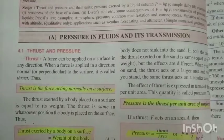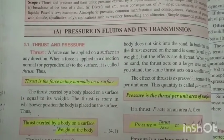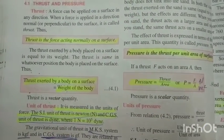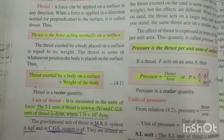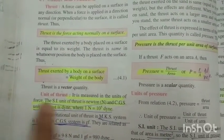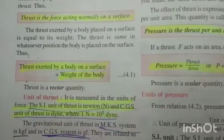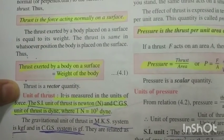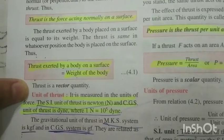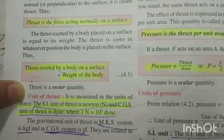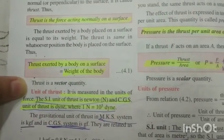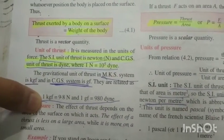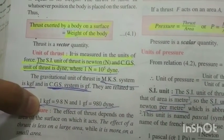The SI unit of thrust is the same as force, that is Newton, and the CGS unit is dyne. One more important thing: thrust is a vector quantity because it is applied in a particular direction. Also, 1 kgf is equal to 9.8 Newton.